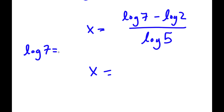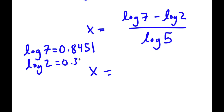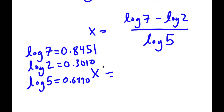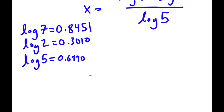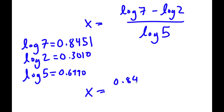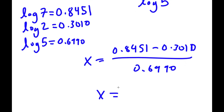Log 7 is equal to 0.8451, log 2 is equal to 0.3010, and log 5 is equal to 0.6990. So now I have x is equal to 0.8451 minus 0.3010, all over 0.6990, which gives x equal to 0.5441.